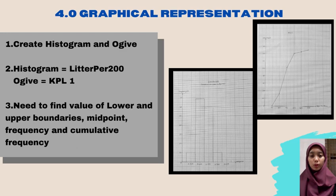Assalamualaikum. My name is Intana Raina binti Mamashin, and my metric is A21A250C. Now I will continue the presentation about graphical representation. In this part, our group chose to create a histogram and ogive to show the data. The histogram is referred as frequency distribution of data set. This histogram also refers to liter per 200. While the ogive is a line graph where it displays cumulative frequency, referred as KPL 1. But before we create the histogram and ogive, we must first find the value of lower boundaries, upper boundaries, midpoint, frequency, and the value of cumulative frequency. Then create it using data.